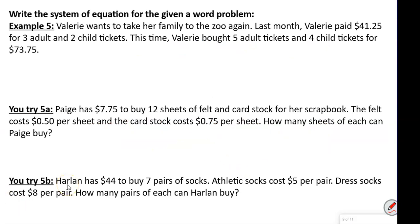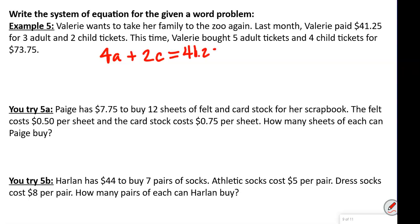Now we write systems of equations for word problems. Valerie wants to take her family to the zoo. Last month she paid $41.25 for three adults and two children's tickets — so that's our first equation: 3A plus 2C equals 41.25. This time she bought five adult tickets and four children's tickets equaling $73.75 — that's our second equation: 5A plus 4C equals 73.75.